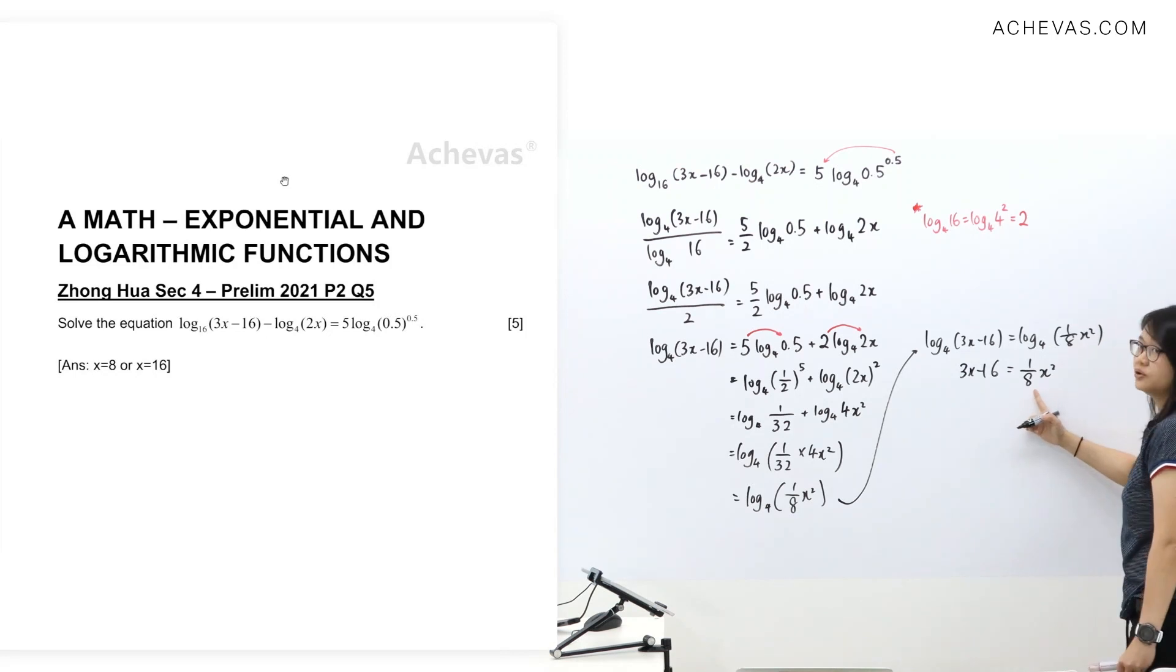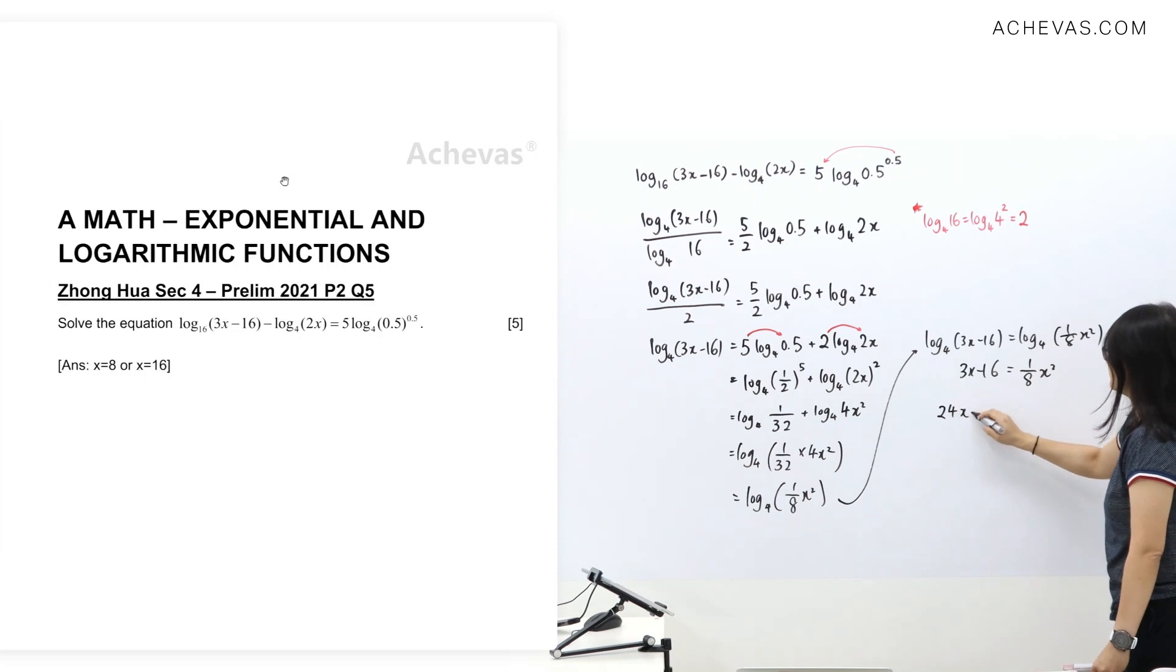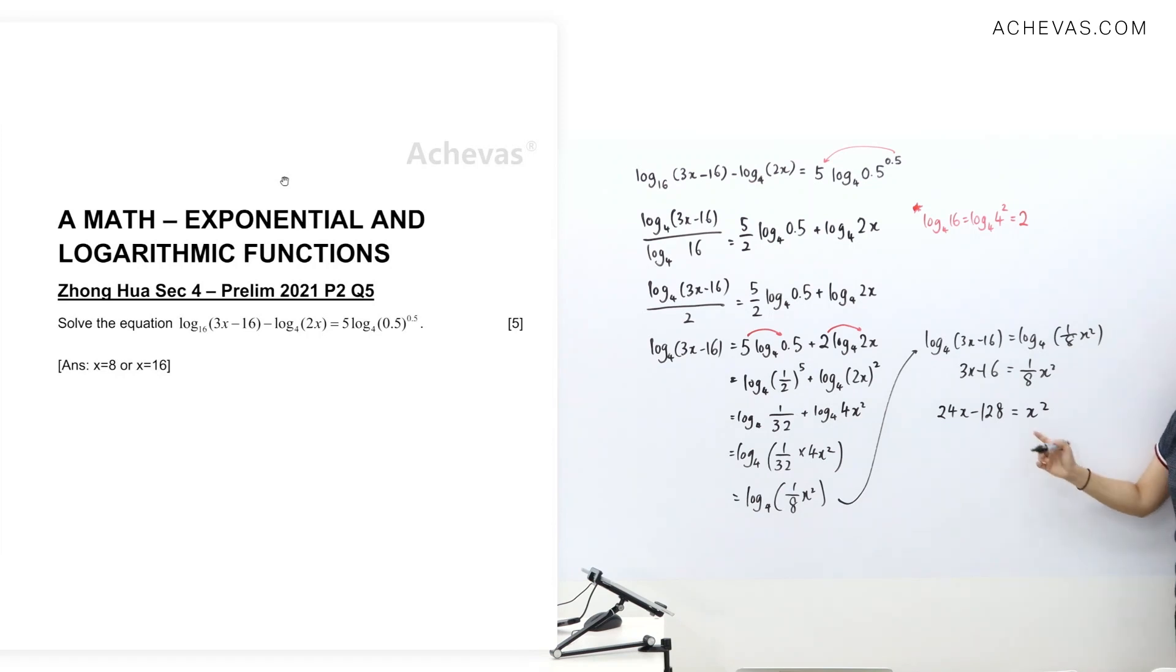So, we don't want to do 1 over 8 fraction, multiply by 8 to get 24x equals 1 times x square. You get a quadratic. We're moving everything to the right-hand side. So, I'll write x square first. Moving 24x to the right, we'll get minus 24x. Moving minus 128 to the right, plus 128. And since we have moved everything on the left away, so on the left-hand side, we're left with 0. So, we get this quadratic.